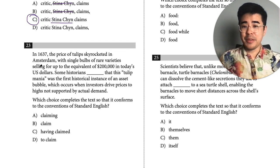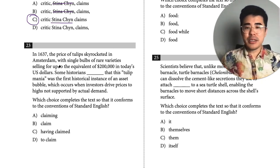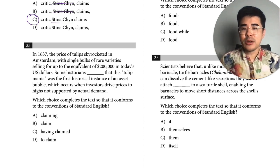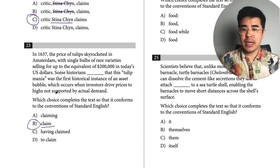They mentioned tulip mania a lot during the Bitcoin hullabaloo in 2019. We have tulips skyrocketing, with single bulbs of rare varieties selling for up to the equivalent of $200,000. Some historians claim — simple verb tense — that tulip mania was the first historical instance of an asset bubble, which occurs when... Independent clause followed by a dependent clause — so 'claim' is the right verb form.